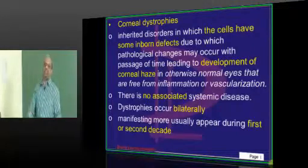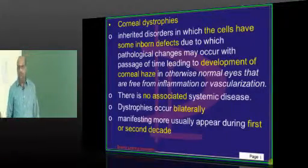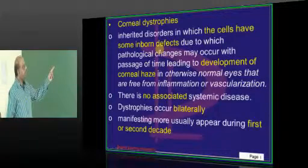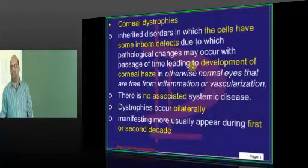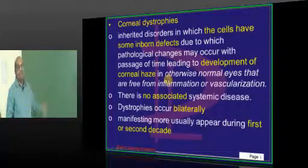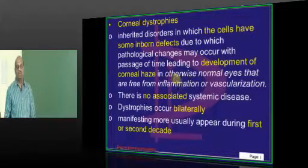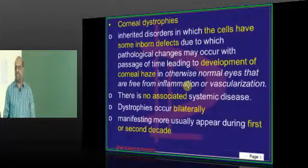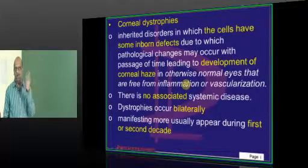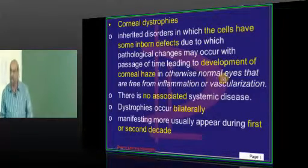Corneal dystrophies are basically an inborn defect where there is development of a corneal haze. Only the cornea is affected — not the lens, retina, or uvea. Just the cornea.